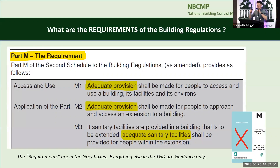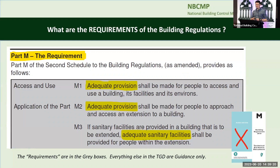Taking you back to first principles — what are actually the requirements of the building regulations? Earlier speakers talked about technical guidance documents and all the paragraphs in them, the 350 bullet points in section one alone. What are the actual first principles? If you go back to Part M1: adequate provision shall be made for people to access and use a building, its facilities, and its environs.